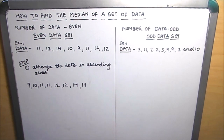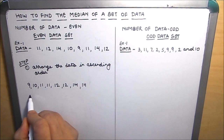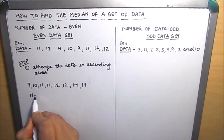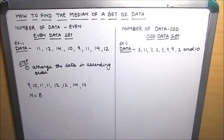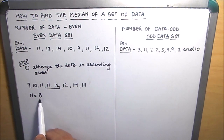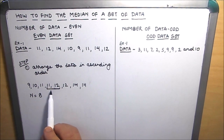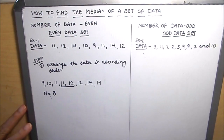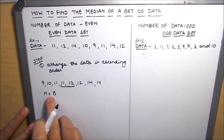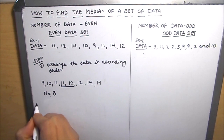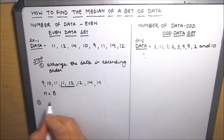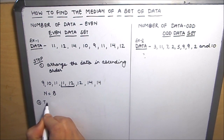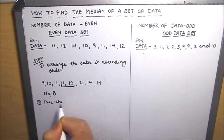We have arranged the data in ascending order, and the number of terms here, which is called n, is 8, which is even. In this case, when the number of data terms is even, we take the average of the two middle terms. So our second step here is to take the average of the two middle terms.